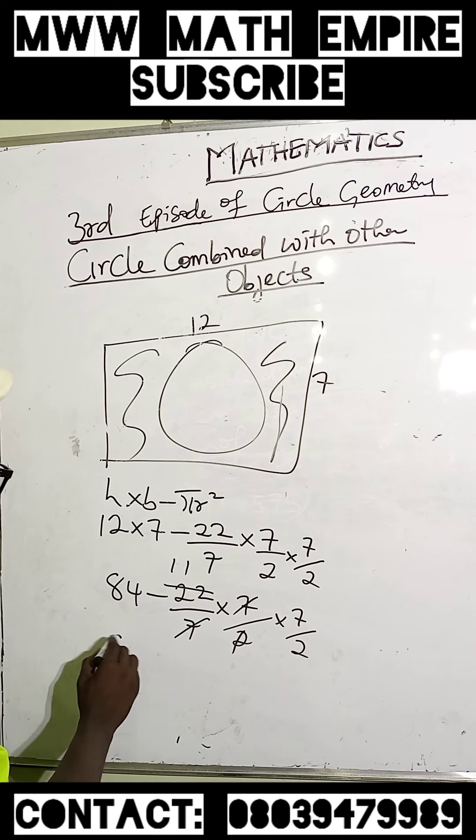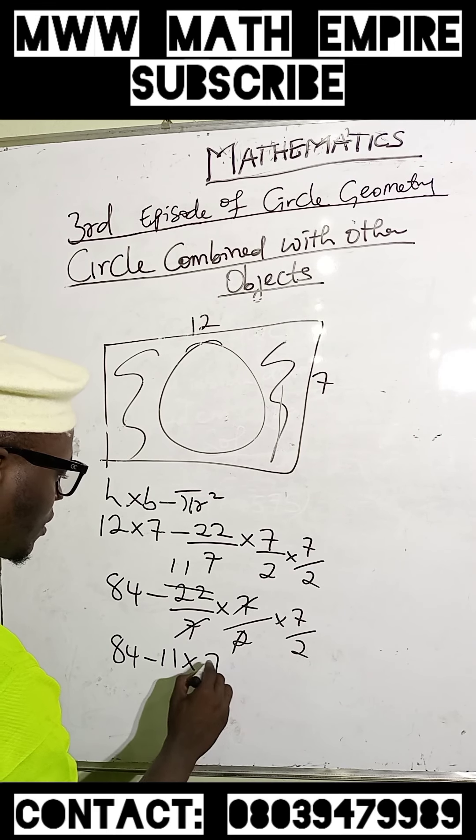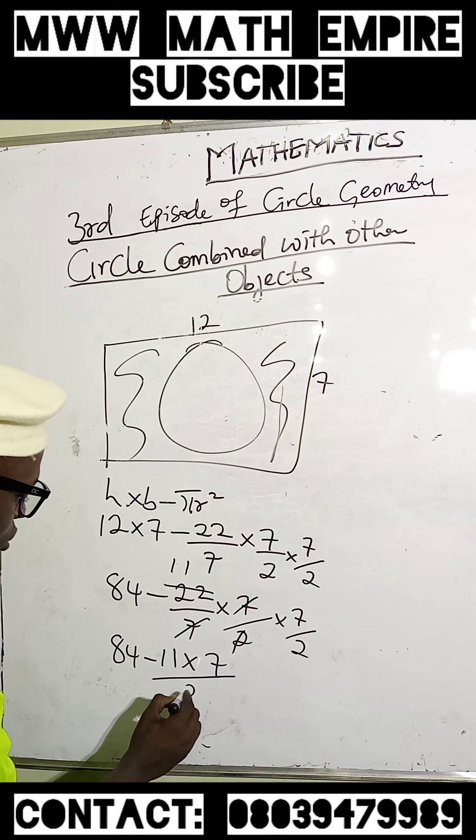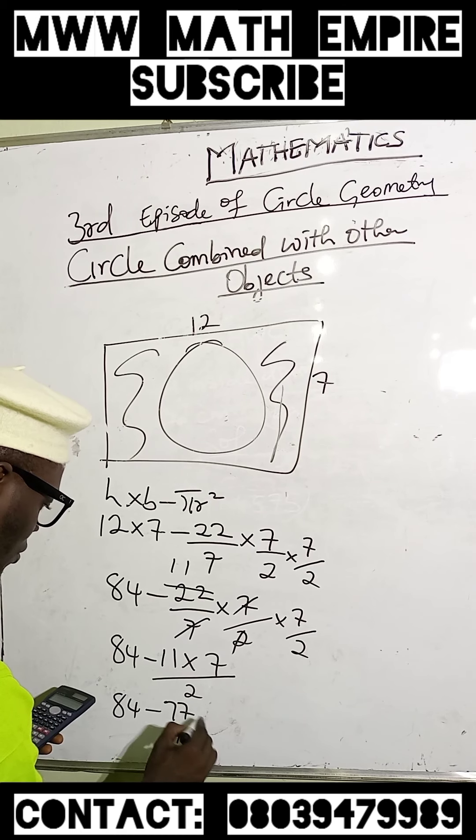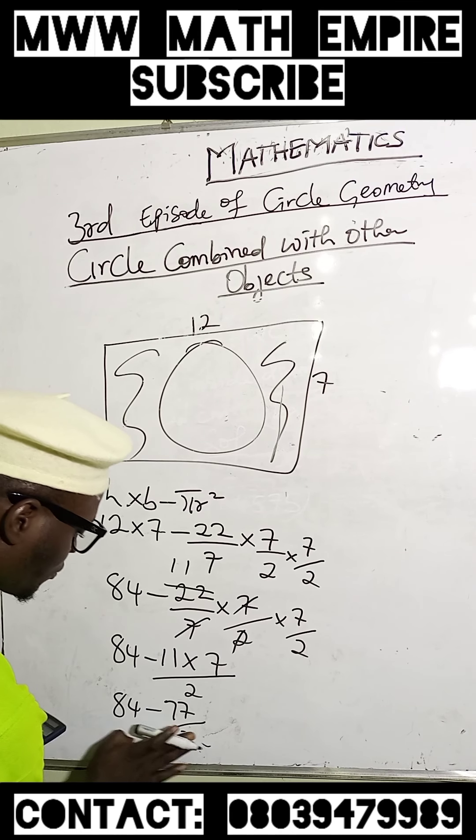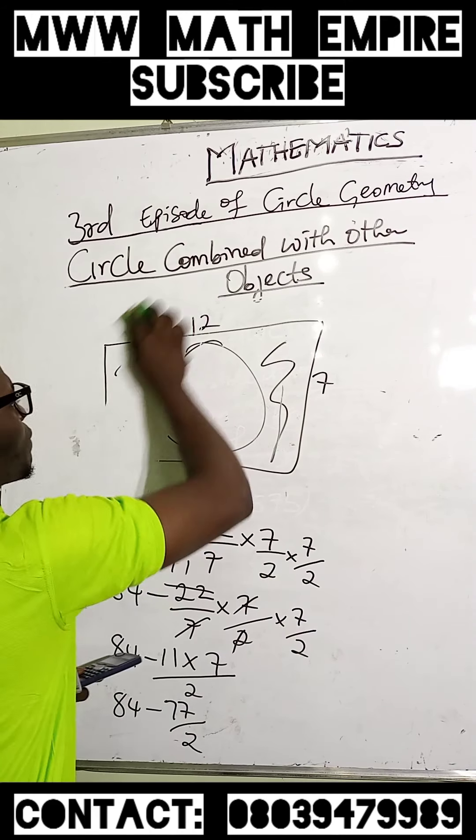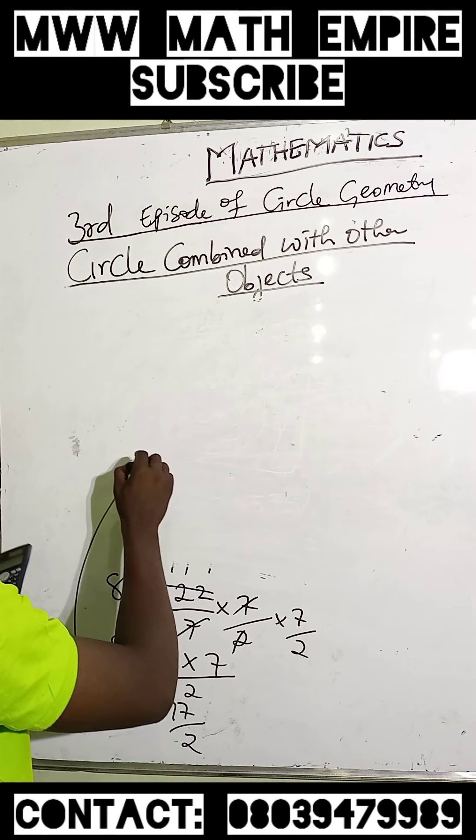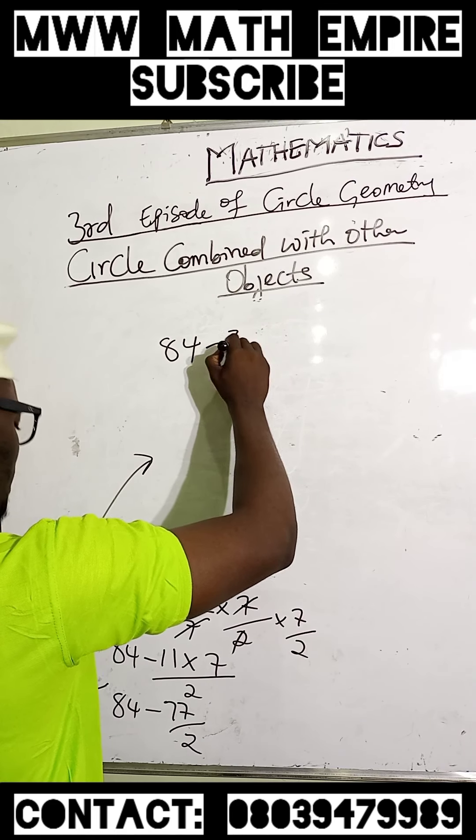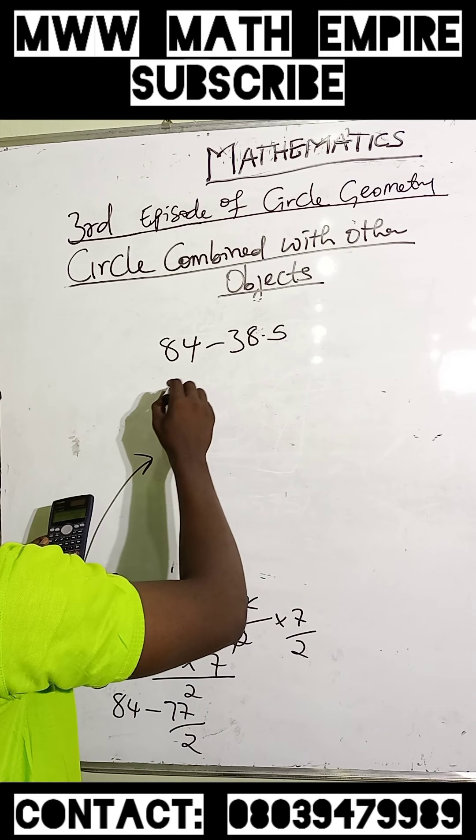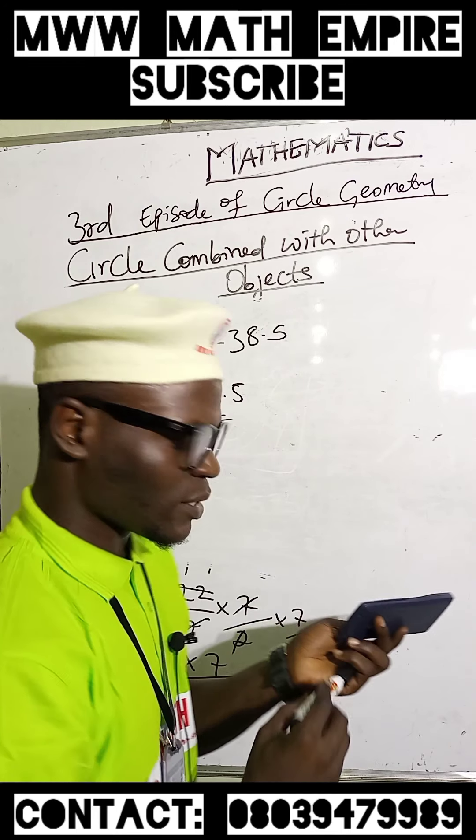We will have 84 minus 11 times 7, all over 2, which gives us 84 minus 38.5, resulting in 45.5 as our answer.